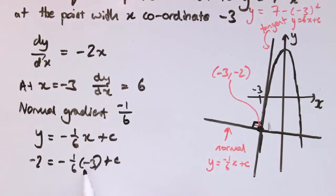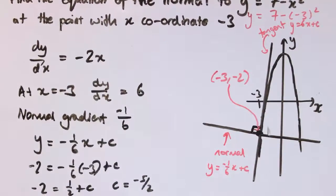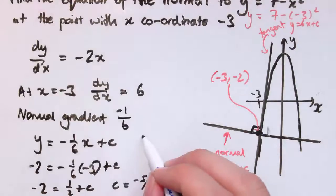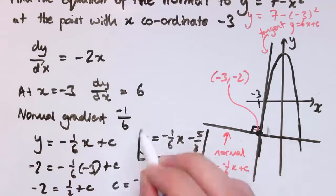So minus 2 is minus 1 sixth times minus 3 plus c. So minus 1 sixth times minus 3, that's plus 1 half. So we've got minus 2 is 1 half plus c. So c is minus 2 minus 1 half. So c is minus 2 and 1 half, or minus 5 over 2. So the equation of the normal is y equals minus 1 sixth x minus 5 over 2.